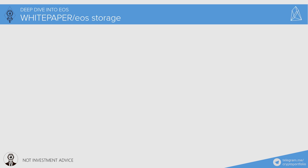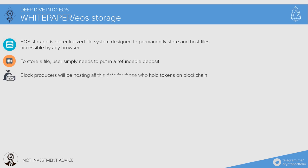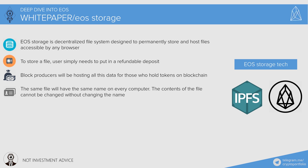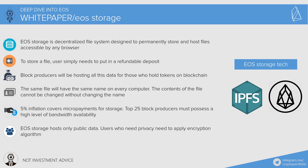EOS team understood the importance of decentralized file storage, so they created a separate white paper for EOS storage software. EOS storage is a decentralized file system designed to permanently store and host files accessible by any browser. To store a file, a user simply needs to put in a refundable deposit. Block producers will host all this data for those who hold tokens on the blockchain. The same file will have the same name on every computer, and the contents of the file cannot be changed without changing the name. 5% inflation covers micropayments for storage. Top 25 block producers must possess high bandwidth availability. EOS storage hosts only public data; users who need privacy must apply encryption algorithms.